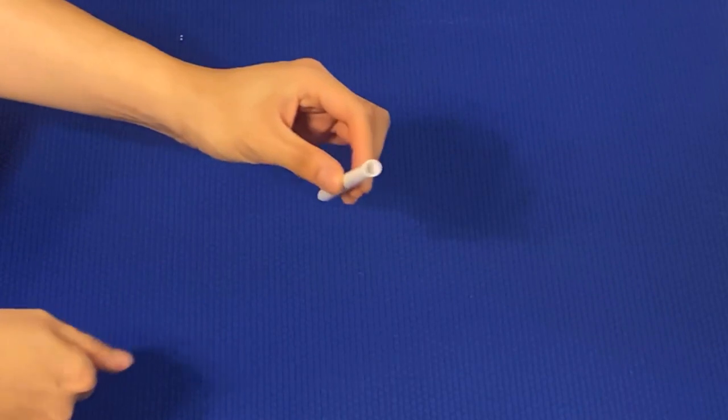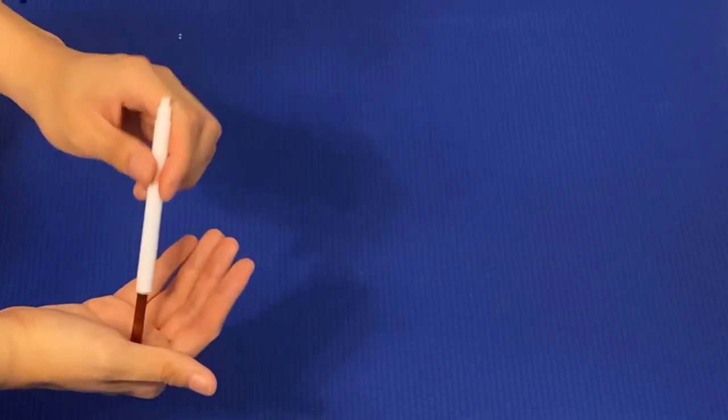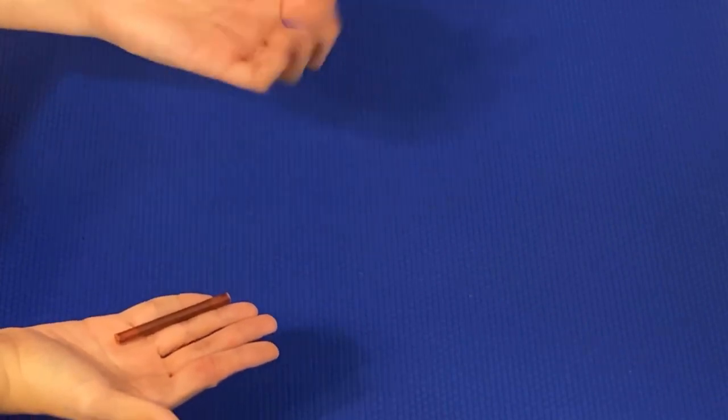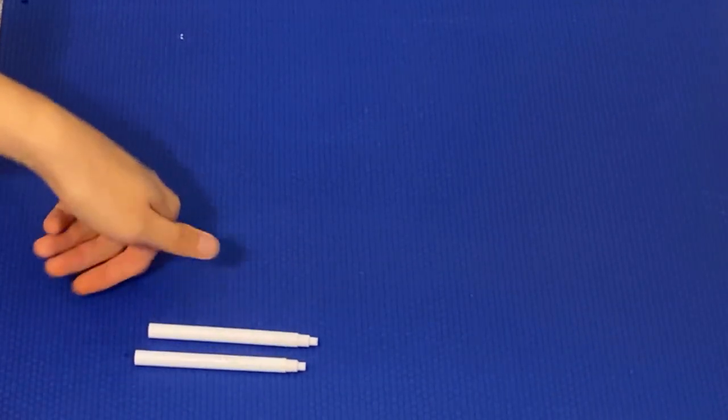Once you finish with that, just take the back part of the pen and then take the ink from the inside out. It should be easy taking the ink out. You just turn the Crayola pen upside down. And once you finish that, rinse and repeat and do it for the other Crayola pen.